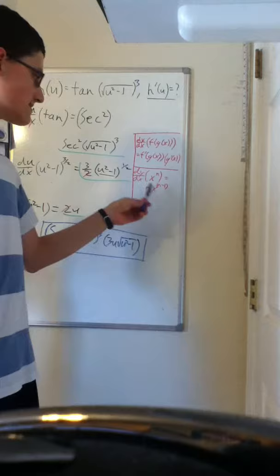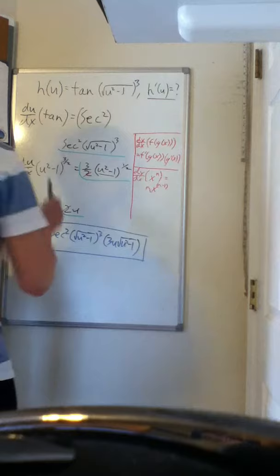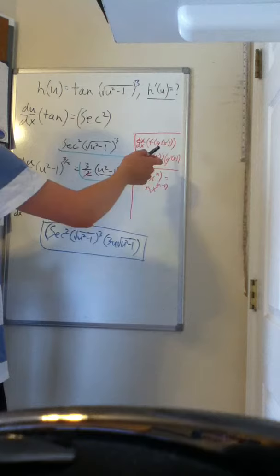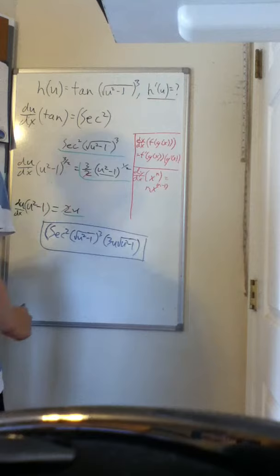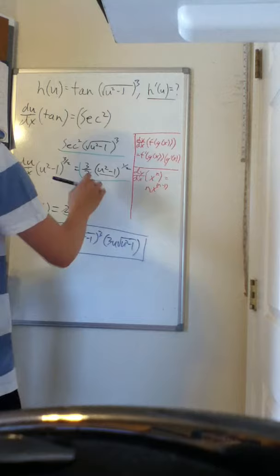And so in this case, the exponent is our f of x. The inside is our g of x. So we simply take the derivative of our outside function. By the power rule, we multiply by the exponent, we get three over two.